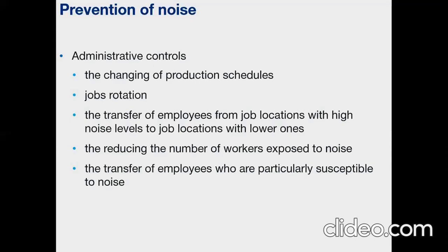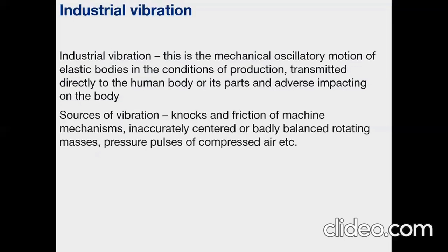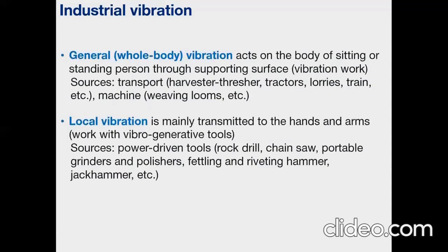Employees who are particularly susceptible to noise can be transferred to work in a less noisy area. Industrial vibration is the mechanical oscillatory motion of bodies in conditions of production. It transmits directly to the human body or its parts and has adverse impacts on the body. Sources of vibration are knocks and friction of machine mechanisms, inaccurately centred or badly balanced rotating masses, pressure pulses of compressed air, and so on. According to the method of propagation in the human body, vibration is divided into general — whole-body vibration at work — and local, occurring at work with vibration-generating tools.